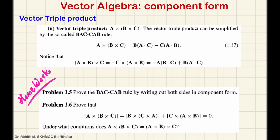Next, we move on to the vector triple product. Here we have the cross product of two vectors, and then a third vector is again taken in a cross product. So the combined operation gives a vector quantity, which is why it is called the vector triple product. The expansion follows the BACCAB rule.